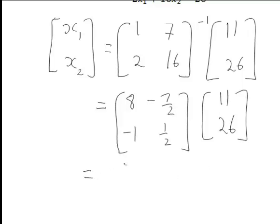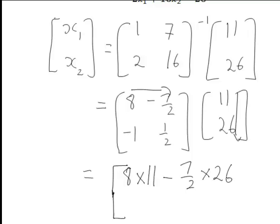Which for the first element of this resulting matrix will be going along the first row of this matrix and the first column of that one to give 8 times 11 minus 7 on 2 times 26. While the second element of this will be negative 1 times 11 plus a half times 26.